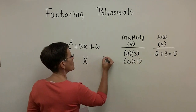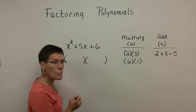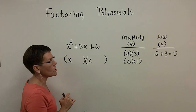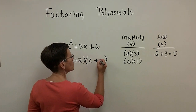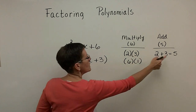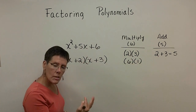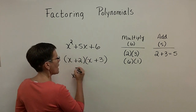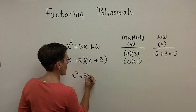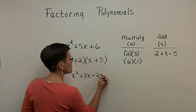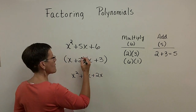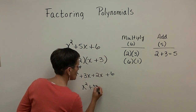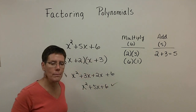Once I find those two values, I break the trinomial into the product of two binomials. I put an x in the front of each, because their product gives the x squared term, then plus 2 in one and plus 3 in the other. Foiling back out: x times x is x squared, x times 3 is 3x, 2 times x is 2x for a sum of 5x, and 2 times 3 is 6. That confirms the answer is correct.